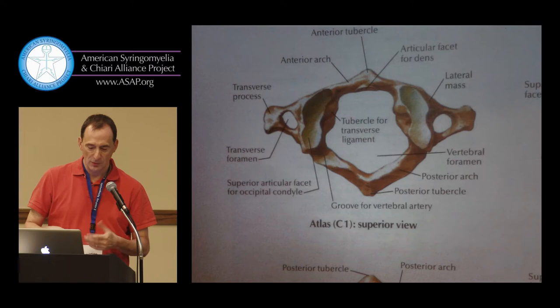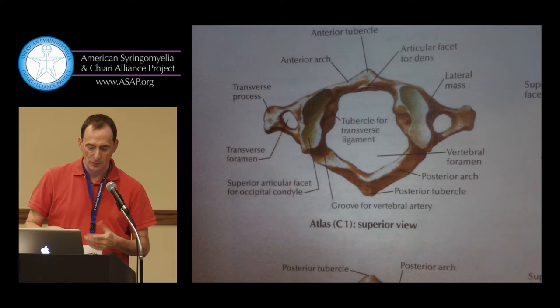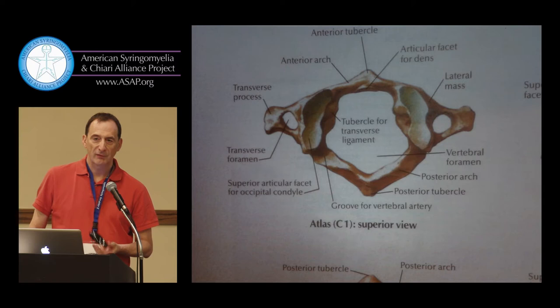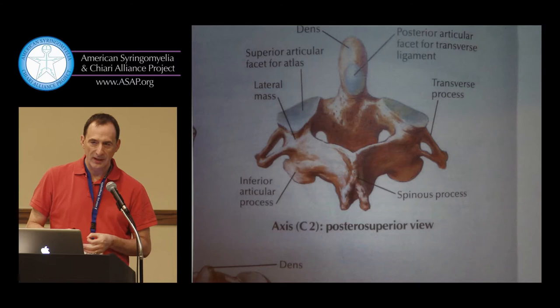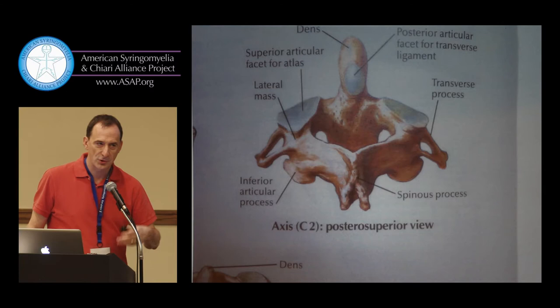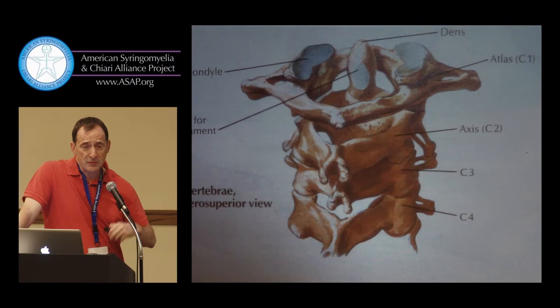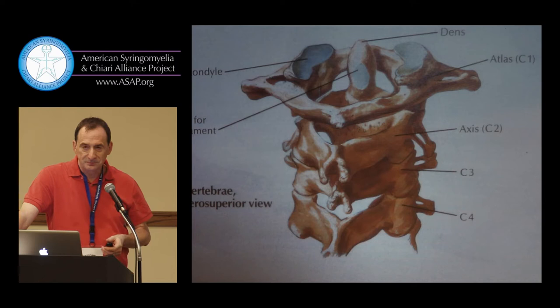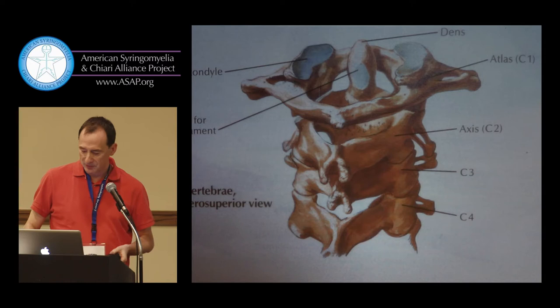Some examples — pictures are always worth more than words. The first vertebra looks like an onion ring. The second vertebra is more complex — it's an onion ring attached to a fist with the birdie sticking up, and that is the odontoid or dens, depending on whether you pronounce it the Greek or Latin way. Once you put the first and second vertebra together, you have a complex arrangement, and you need ligaments to keep them together. Ligaments are rubber bands that our body has to keep the joints together.